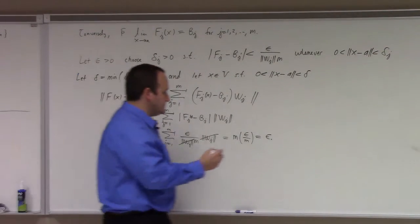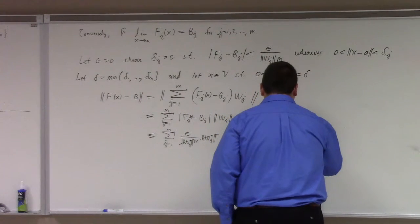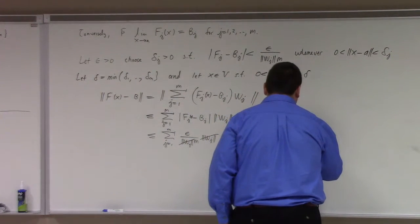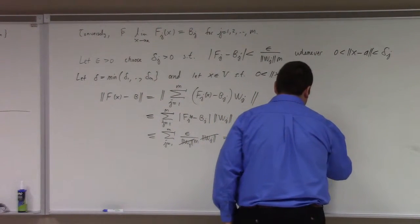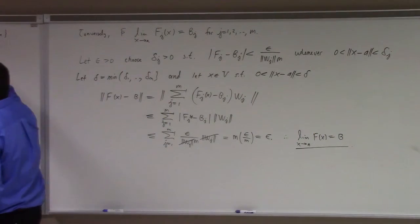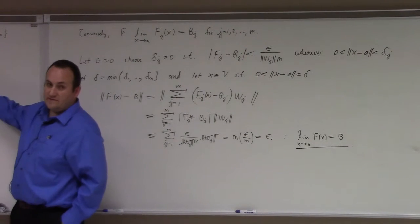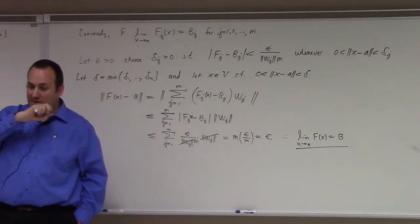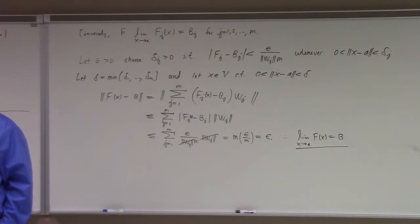So that shows, therefore, the limit as x goes to a of f of x is equal to b. So, aha, we have it. That we can interchange the... I refer to this as the vector limit problem. It means that if you have a vector-valued function, it suffices to look at each component function one at a time, and you can piece those together and nothing is lost.